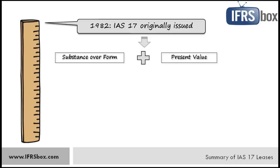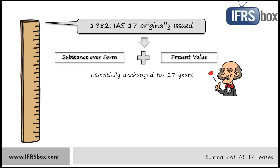Since 1982, there have been some revisions to IAS 17; however, it remained essentially unchanged for 27 years. IAS 17 is quite an old standard and its principles still apply in the same manner as in 1982. However, there is great development of IFRSs in the world and, as you might know, IFRS and US GAAP converge in order to develop a single set of accounting and reporting principles. Therefore, the old concepts seem to be outdated.